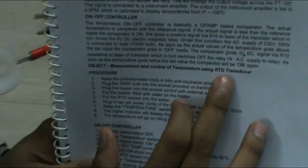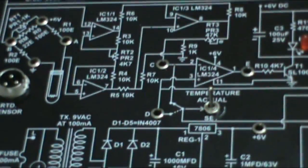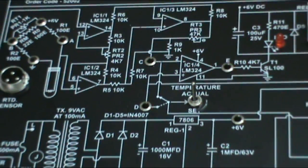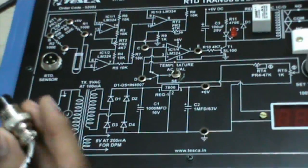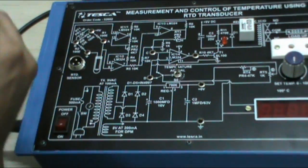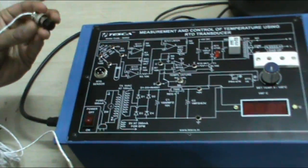Now, let's do the experiments. The first objective is measurement and control of temperature using RTD transducer. Now, what is the procedure? First, connect the transducer to this socket.